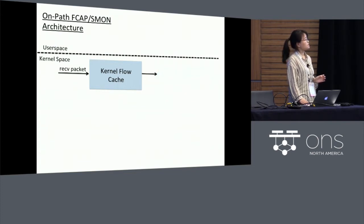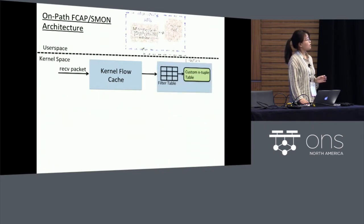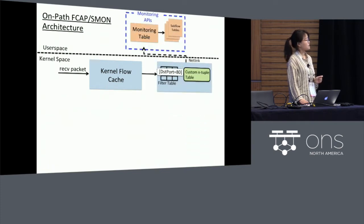Using the same example as we just discussed, the monitoring application installs a filtering rule that specifies the destination port of 80 into the filtering table. And incoming packets are first being matched against in the kernel flow cache before being looked up in the filtering table. Only the packets that are determined to be relevant to a user-defined monitoring task, in this case, only the packets that have the destination port of 80 will be updated towards the custom end table table, which will get periodically exported to the user space.